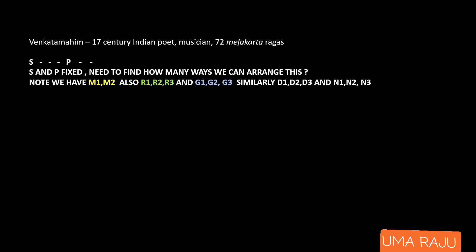Venkata Mahim is one among many musicians who framed the 72 Melakarta ragas. Sa and Pa are left fixed, while Ri, Ga, Ma, Dha, and Ni are variable. We have only one Sa and one Pa, so those are fixed. For Ri we have three variants: Ri1, Ri2, Ri3. For Ga we also have three: Ga1, Ga2, Ga3. For Ma we have only two: Ma1 and Ma2. For Dha and Ni, similar to Ri and Ga, we have three each.